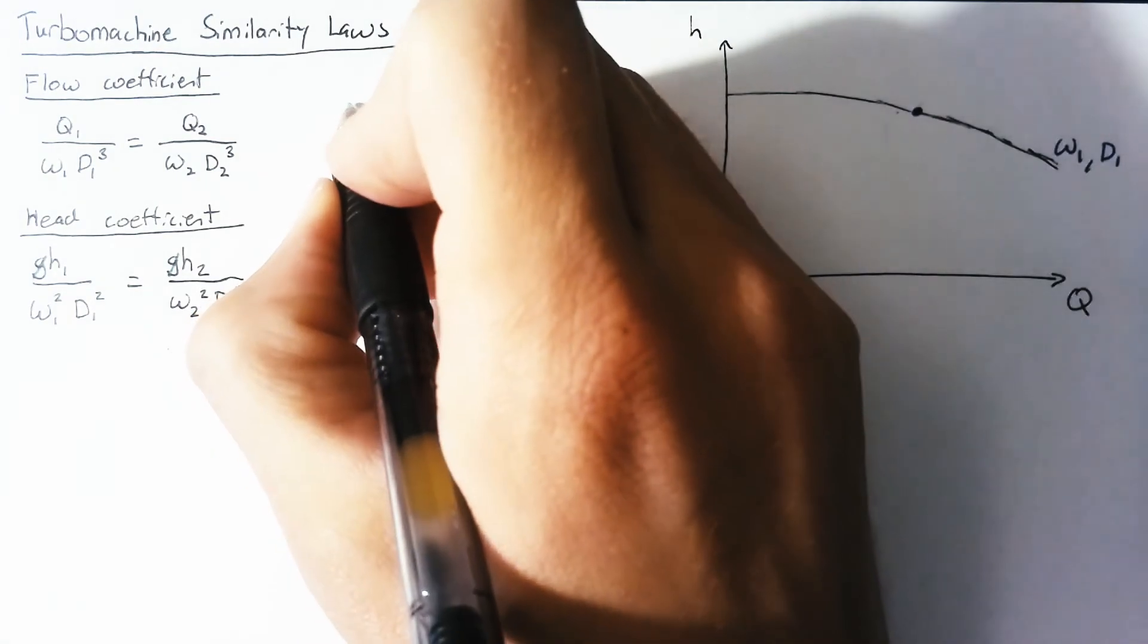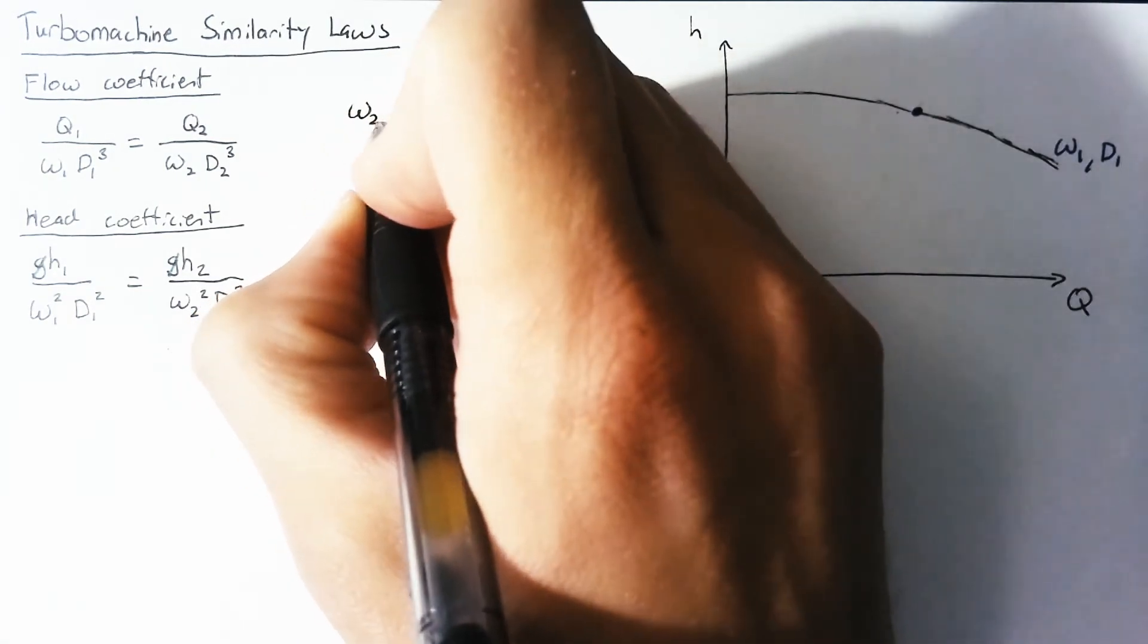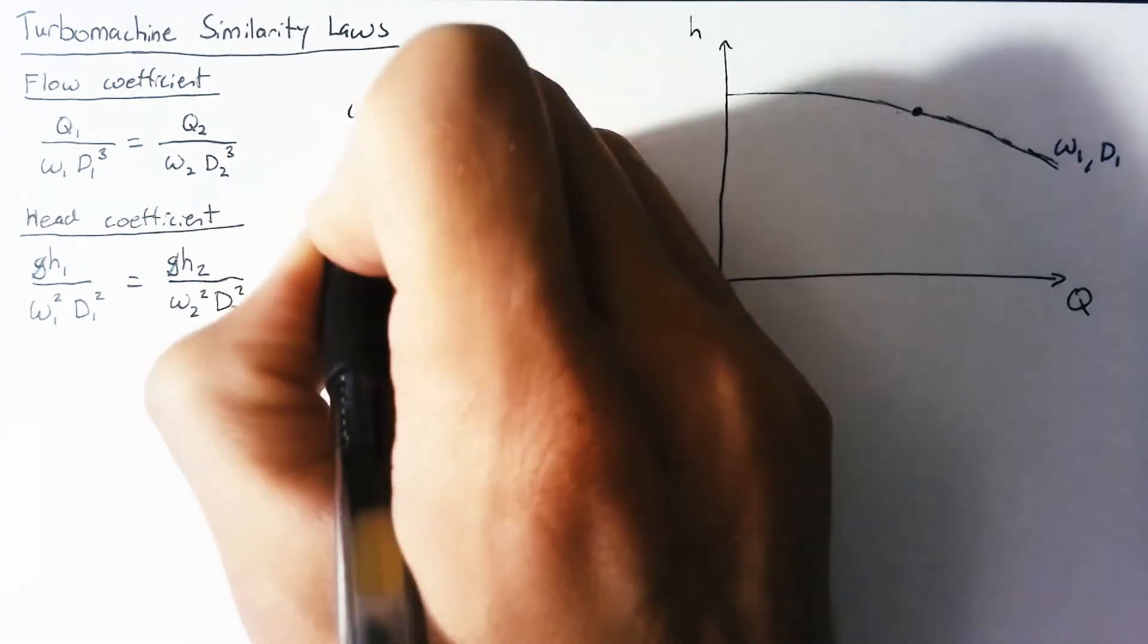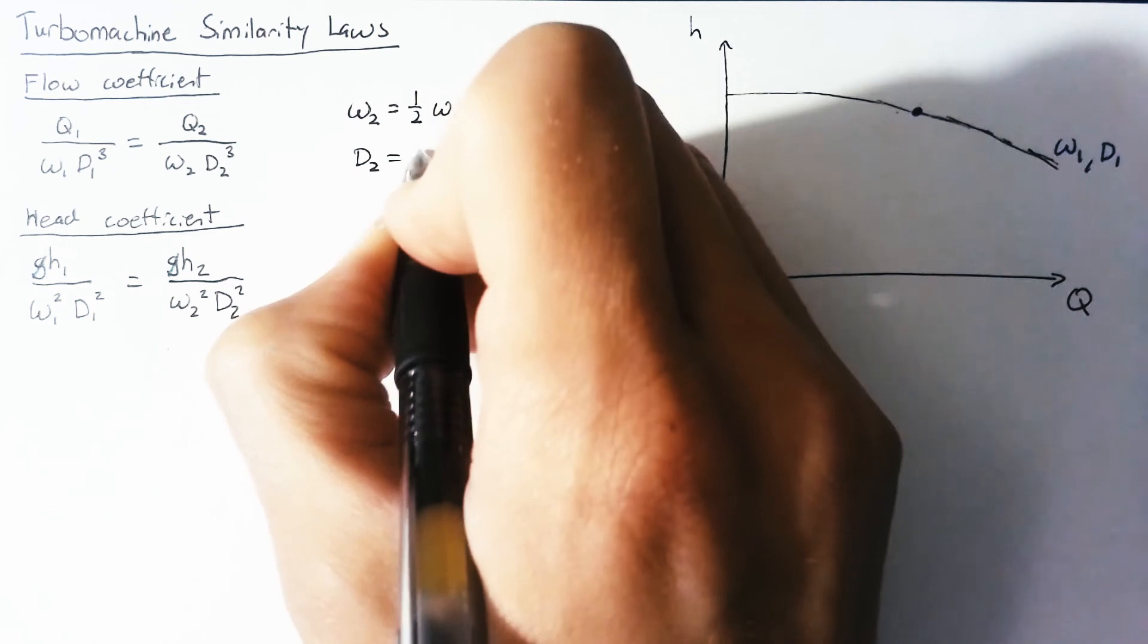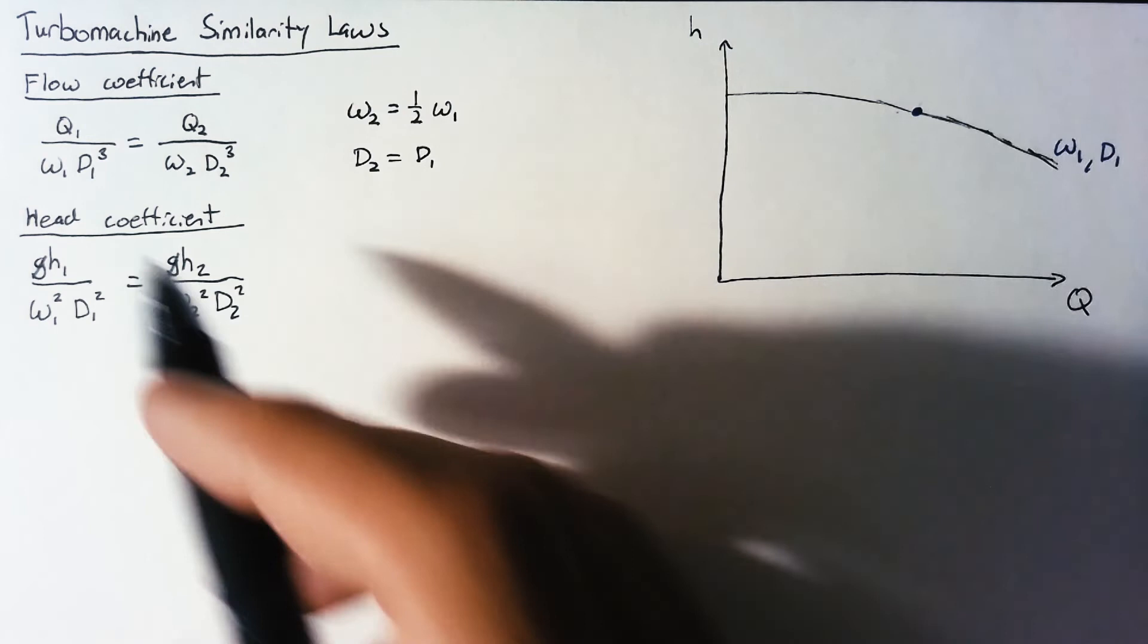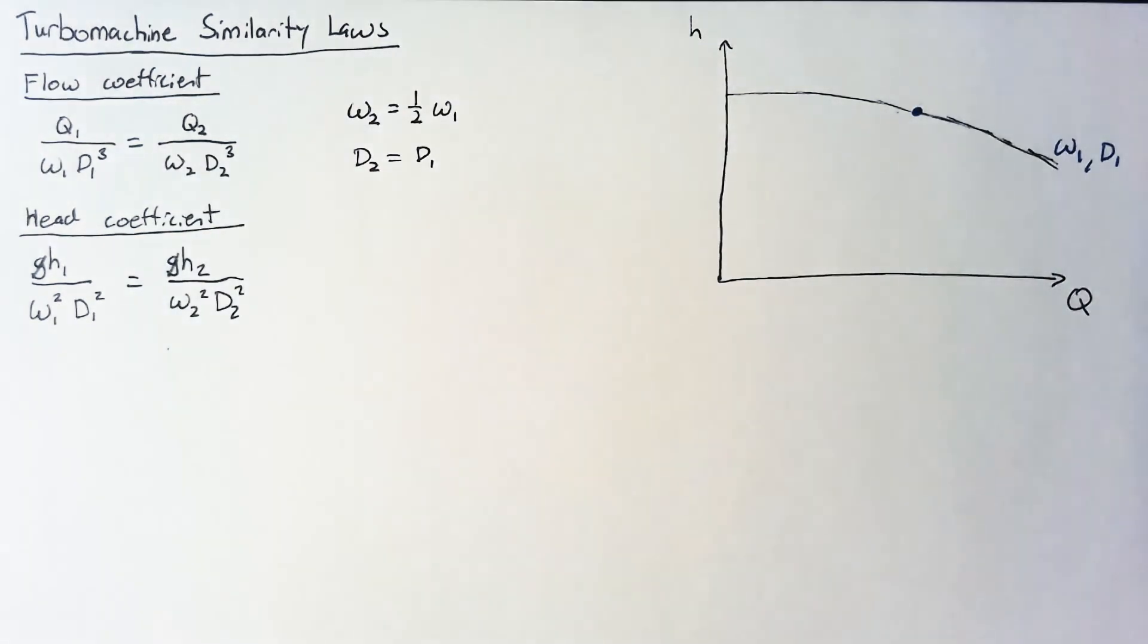But let's stick with our omega value and see how that affects our pump curve. So if we said that we're going to slow this down and set our omega 2 to one half our omega 1 while keeping our diameter the same.